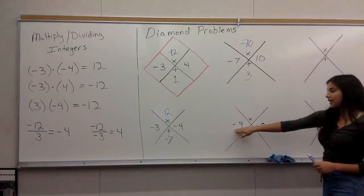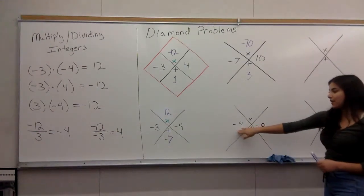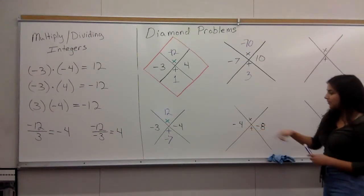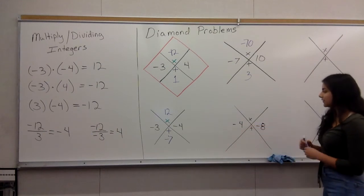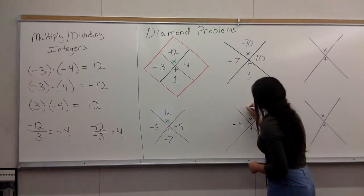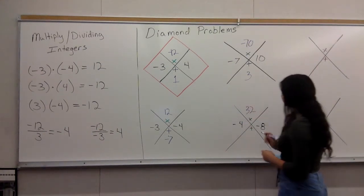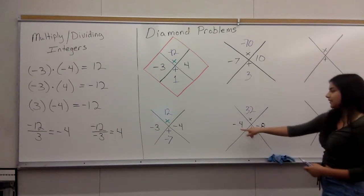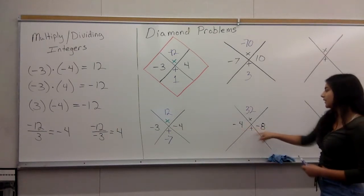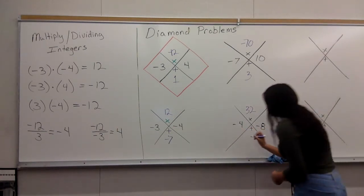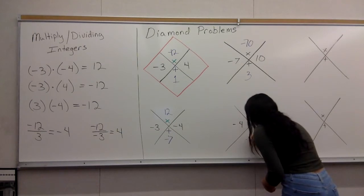Now here you have negative four and negative eight. You multiply them — a negative times a negative equals a positive, so it will be positive 32. And you add them: negative four plus negative eight will give you negative 12.